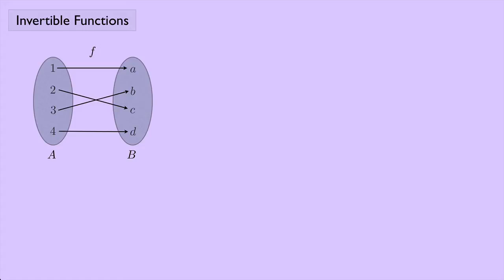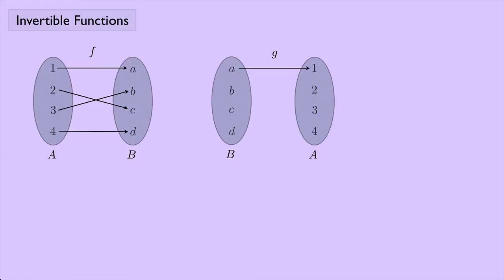Now is there any way to undo F — to find a function that does the reverse? In other words, if I have set B with elements A, B, C, and D, and set A with elements 1, 2, 3, and 4, I want A to go back to 1, B to go back to 3, C to go back to 2, and D to go back to 4, and I'll call this function G.